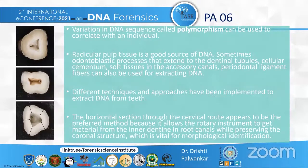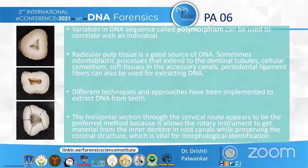A variation in DNA sequence is called polymorphism and can be used to correlate with an individual. The radicular pulp — that is, the pulp present in the root portion of the tooth — is a good source of DNA. Odontoblastic processes extending into dentinal tubules, cellular cementum, soft tissues in accessory canals, and periodontal ligament fibers can also be used for DNA extraction. The horizontal section through the cervical root is the preferred extraction method, as it allows rotary instruments to access the inner dentine of root canals while preserving the coronal structure for morphological identification.